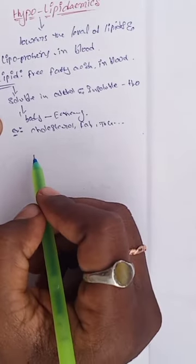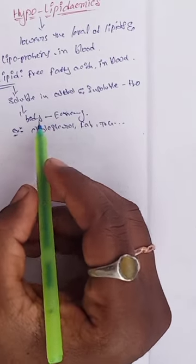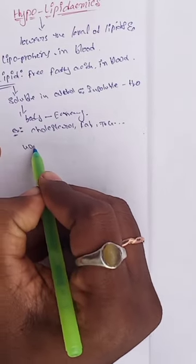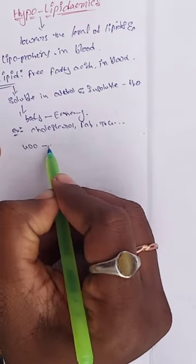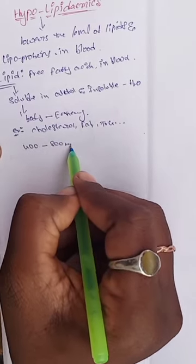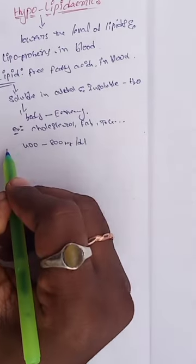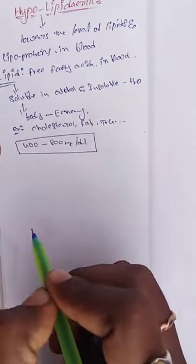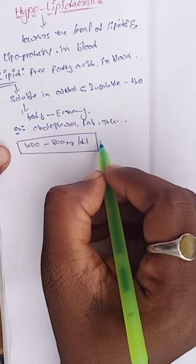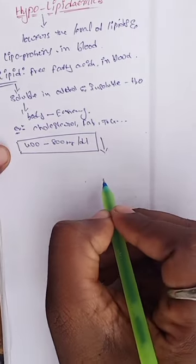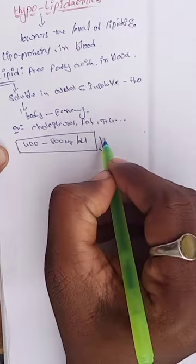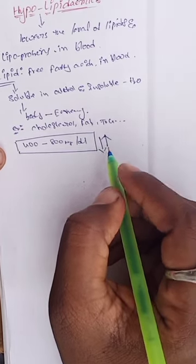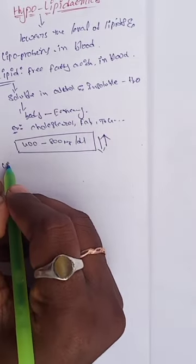What is the normal value of serum lipids? The normal value of serum lipids is 400 to 800 mg per deciliter. When this value decreases, it is known as hypolipidemia. When this value increases, it is known as hyperlipidemia.